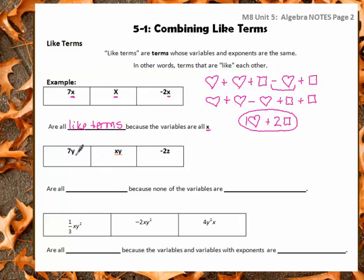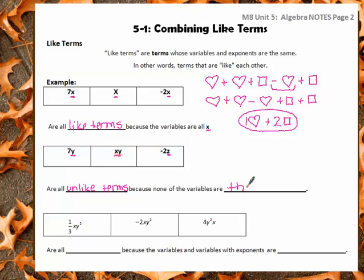Now, if we look at the next one, this one is a Y, this one is an XY, and this one is a Z. They don't have anything in common, so therefore they are all unlike terms, because none of the variables are the same.